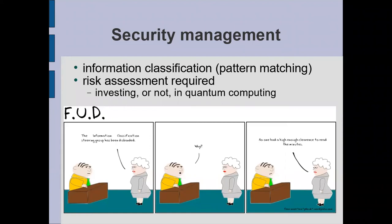Information classification — pattern matching is going to help us there. The pattern matching capabilities of quantum computers in risk assessment is not something people look forward to, but we're going to have to do some thought here. Is it going to be worth investing in quantum computing? Figuring out what it can do for us and what the benefits are is going to be part of that decision as to whether or not we're going to get into the field of quantum computing for those benefits.